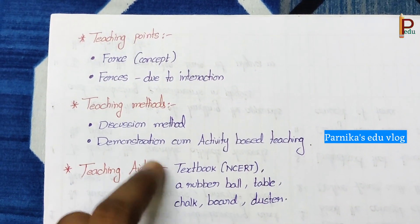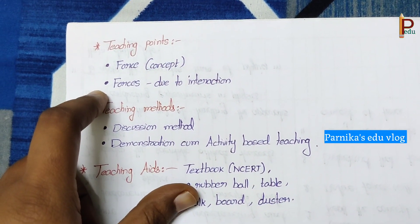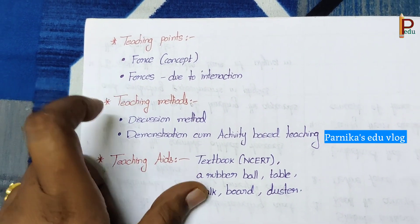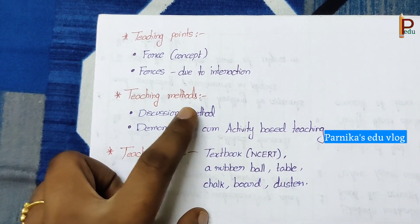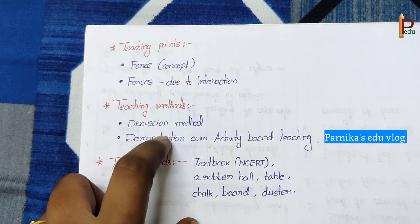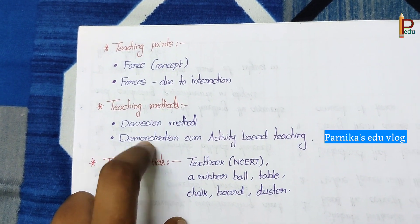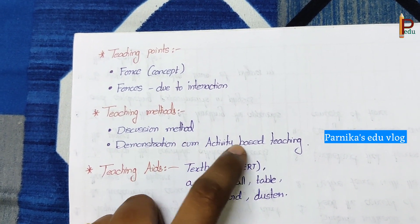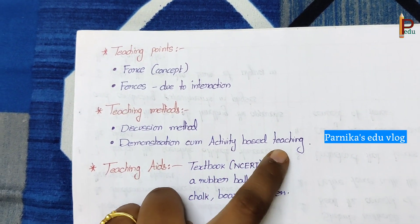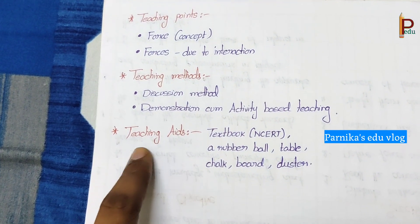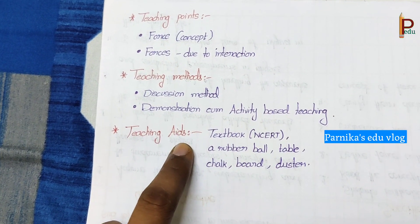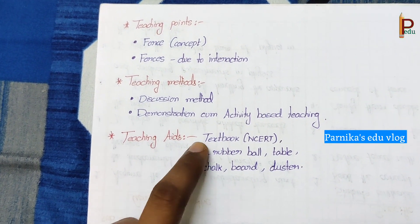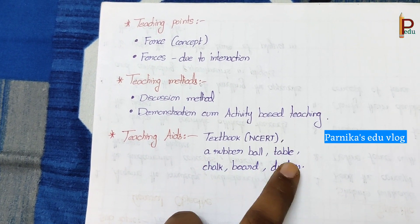Teaching points — what are the topics we are going to teach in this particular class, we have to mention here. Teaching methods — what are the methods we are using to teach the kids, we have to write here. Teaching aids — what are the things we are using to teach the lesson, we have to write here. Those are the teaching aids.